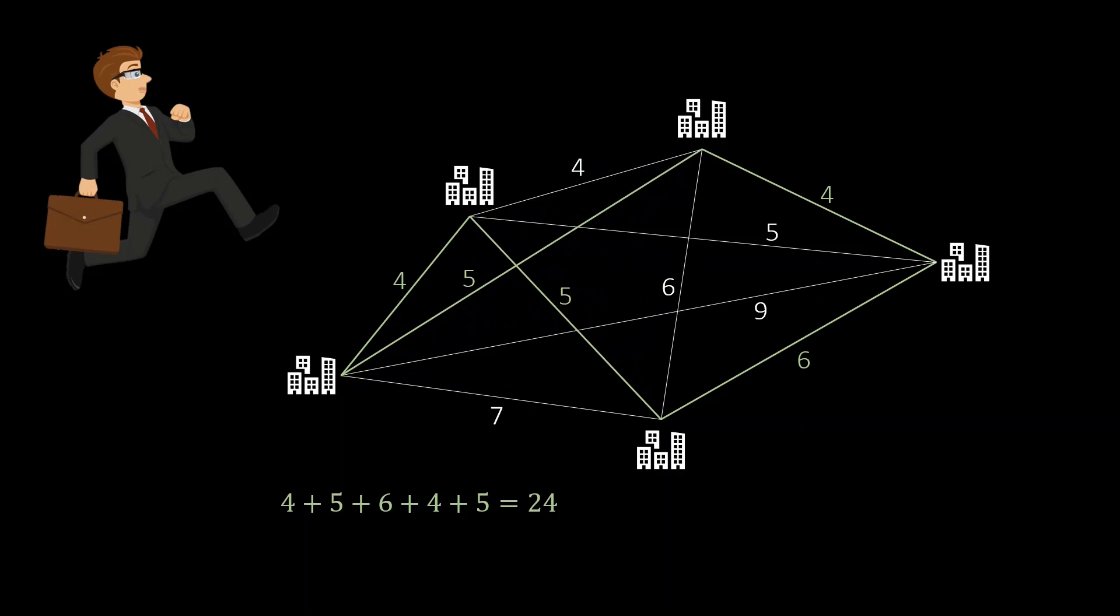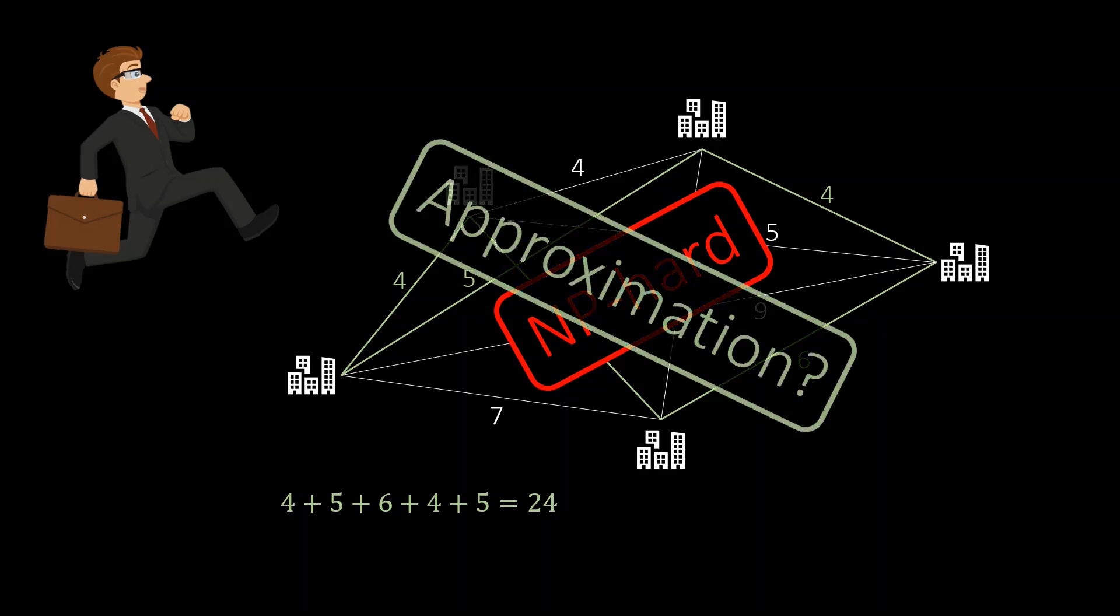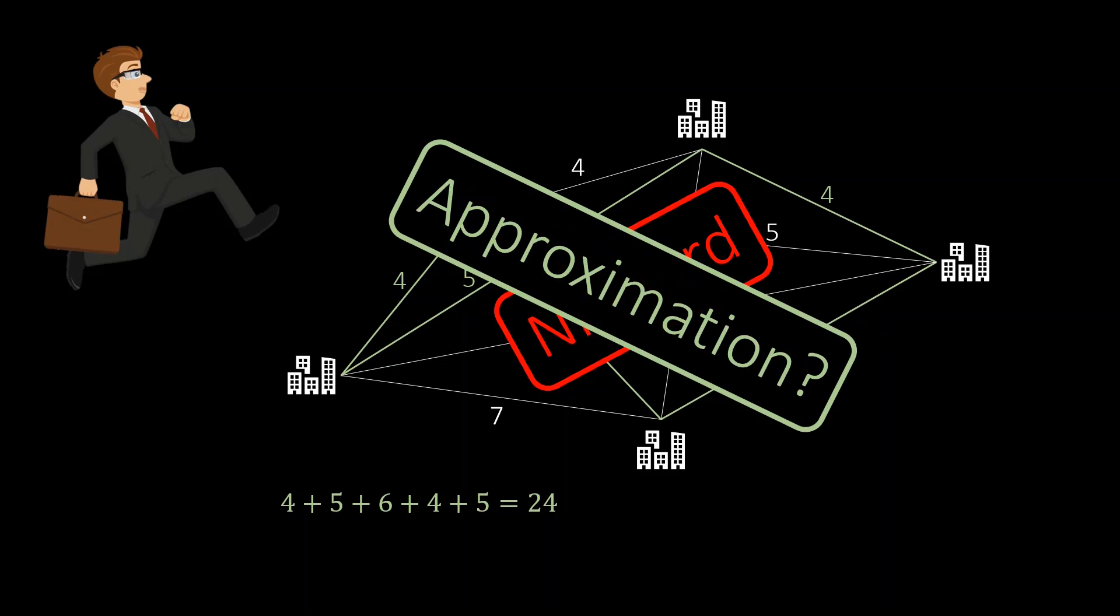Even though this problem seems simple, it is actually really difficult to solve. Finding the shortest tour in polynomial time is impossible. In other words, the problem is NP-hard. So all is lost for the salesperson? Luckily not. Maybe we can still find a relatively short tour, for example, one that is at most 5 or 10% longer than the shortest one. In practice, such an approximate solution is often already enough.